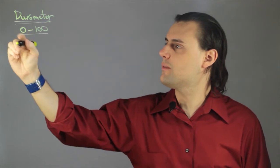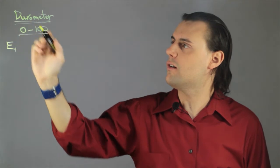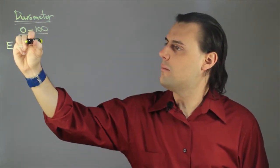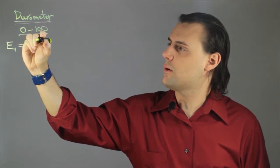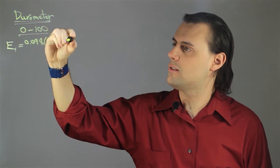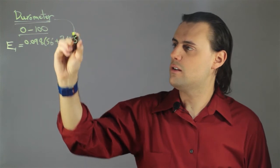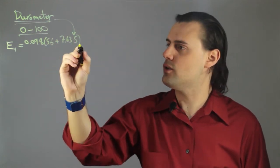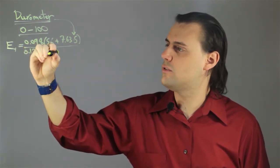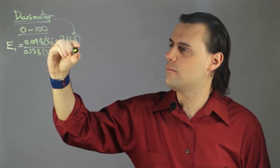So an equation for the Young's modulus, E_Y, in terms of the durometer parameter, is given by 0.098 times 56 plus 7.63 times S, where this is the durometer parameter ranging from 0 to 100, divided by 0.138 times 254 minus 2.54 S.